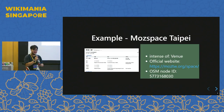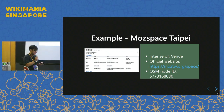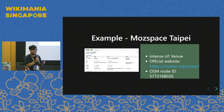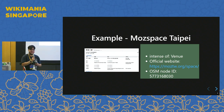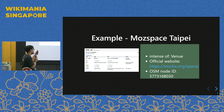Here's a quick example for Wikidata. This is a community venue where we hold our monthly meetup in Taipei. We created a Wikidata item for this space — it's an instance of venue. We have the office site, website, and also a node ID. It's all written down on the Wikidata platform.